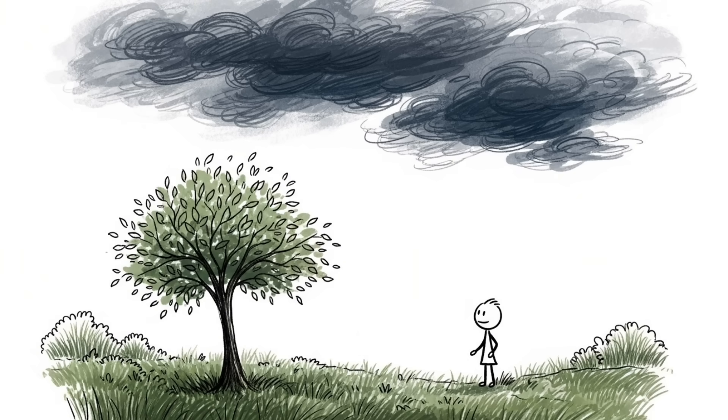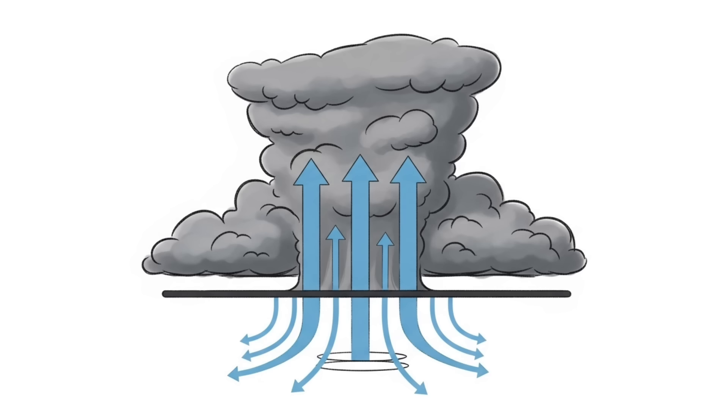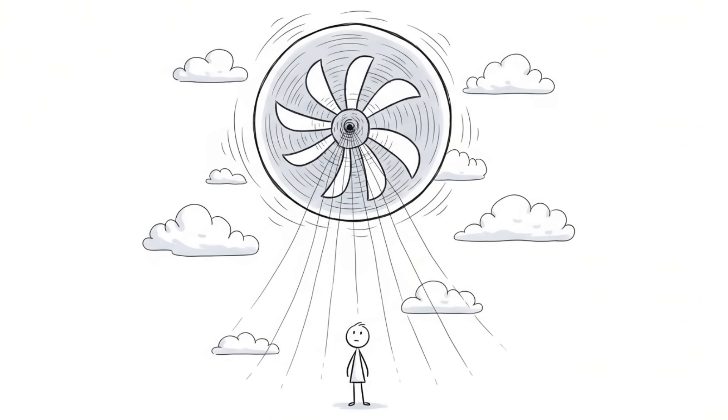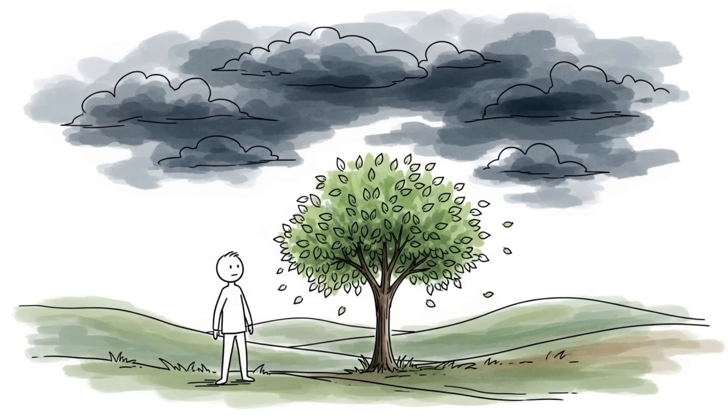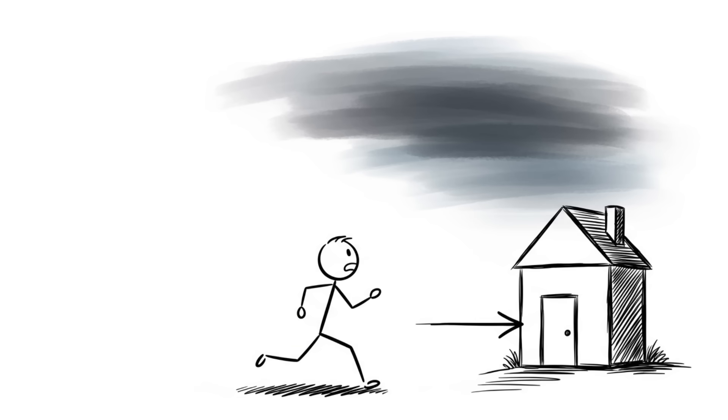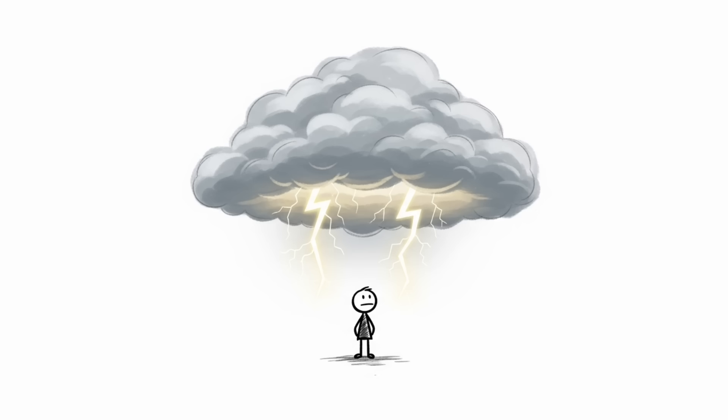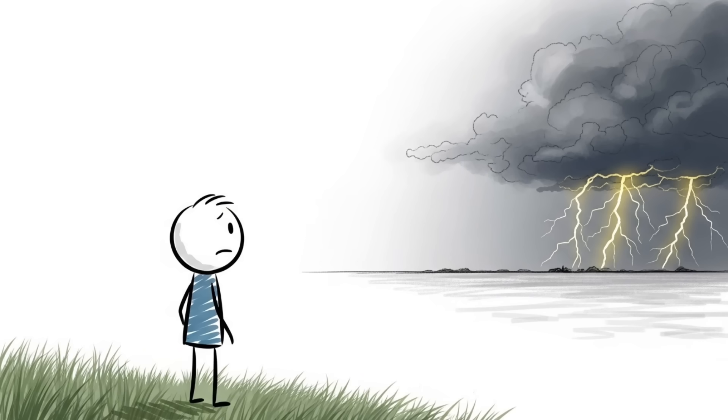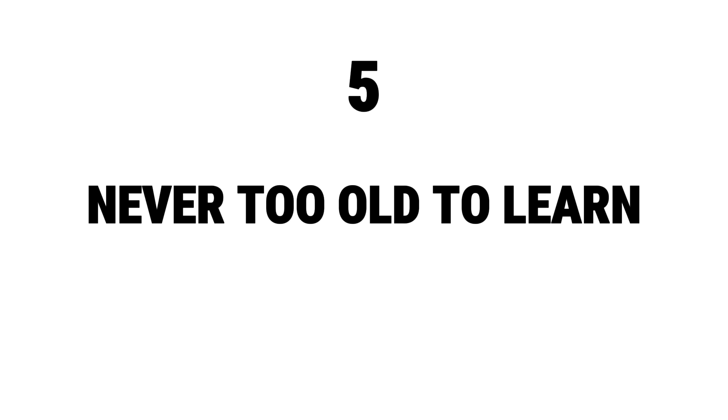This happens because the storm's powerful updraft is pulling air inward and upward, creating a vacuum that cancels out the normal wind patterns. Think of it like a giant fan sucking all the air toward it. So when the sky gets dark and it suddenly gets quiet outside, that's your cue to get inside. It means a storm is building right on top of you. These moments of stillness are a clear signal that the worst is about to begin.